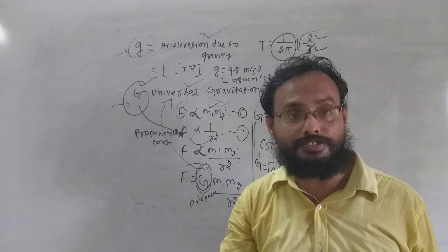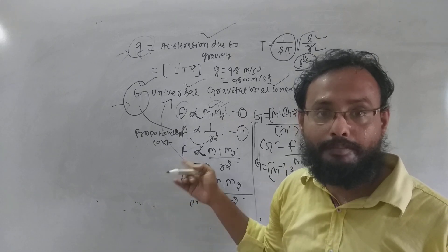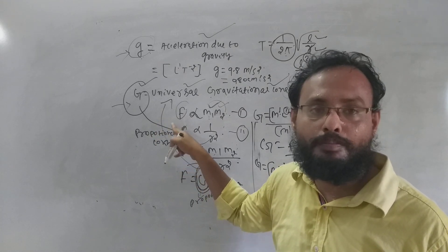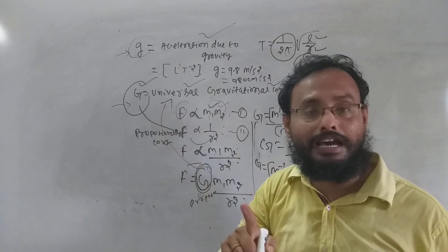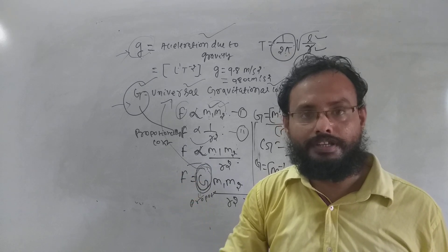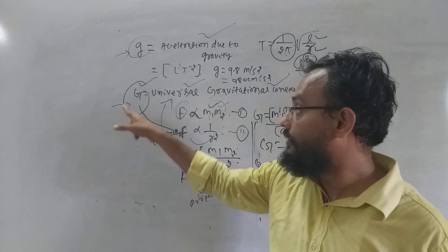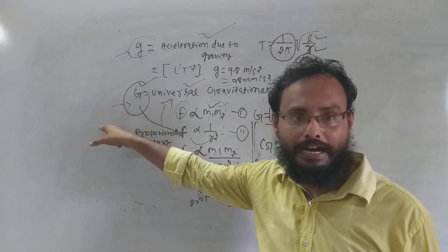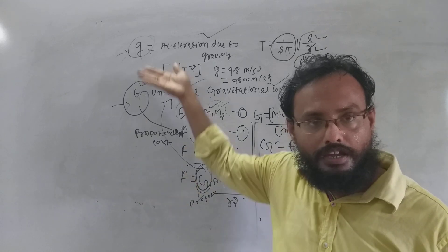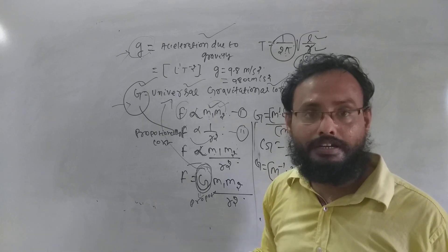We will discuss force constant in the next class. Now, to summarize the proportionality constant and dimensions: a proportionality constant has dimension, while dimensionless quantities include strain, relative density, specific gravity, refractive index, and any pure numbers like pi, e, and all trigonometric functions — these have no dimensions. Next class we will discuss advantages and disadvantages of dimensional analysis. Thank you.